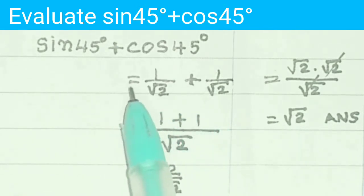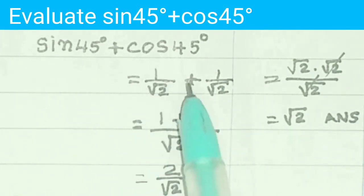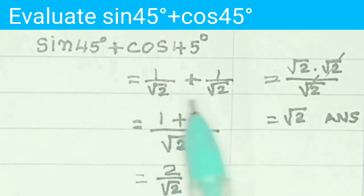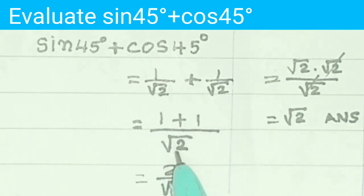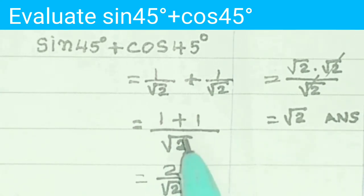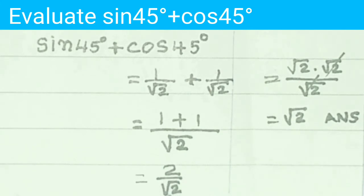It is equal to 1 by root 2 plus 1 by root 2. Both denominators are equal, LCM is root 2. Numerator 1 plus 1 is equal to 2, giving 2 by root 2.